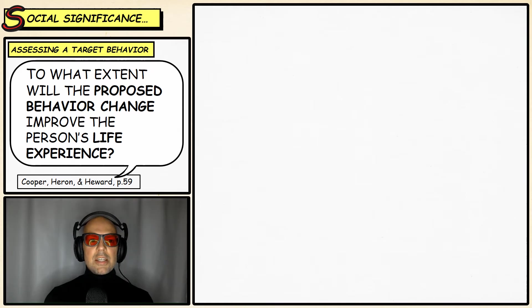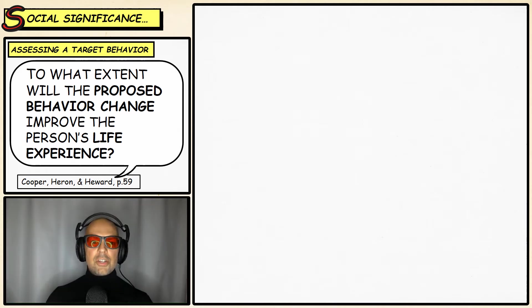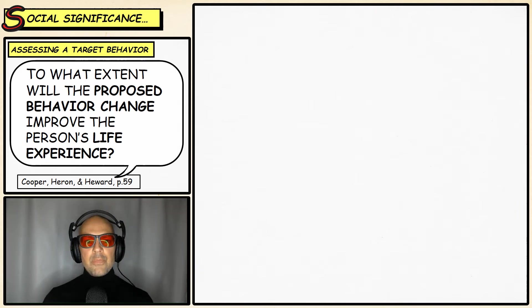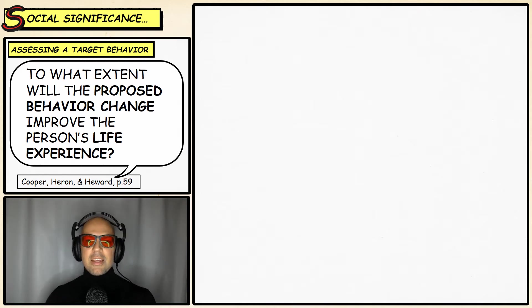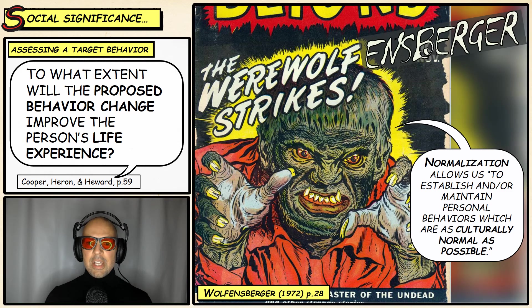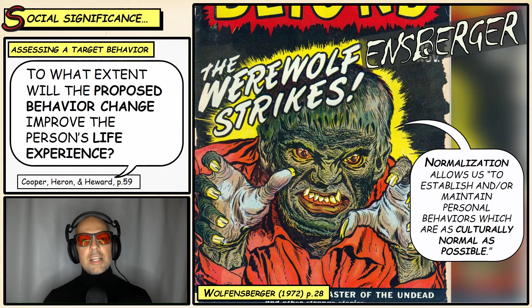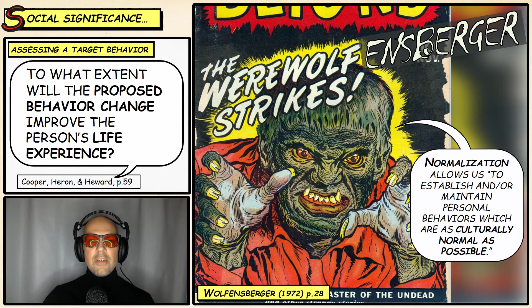Another question we ask when assessing the social significance of a behavior is whether the behavior is age-appropriate. We deal with clients across a wide range of ages, and we want to make sure chosen behaviors are age-appropriate. For example, playing patty cake might be appropriate for an elementary school child, but it would not be socially acceptable for an adult. This brings us to Wolfensberger's idea of normalization — establishing and maintaining personal behaviors that are as culturally normal as possible for a particular age.